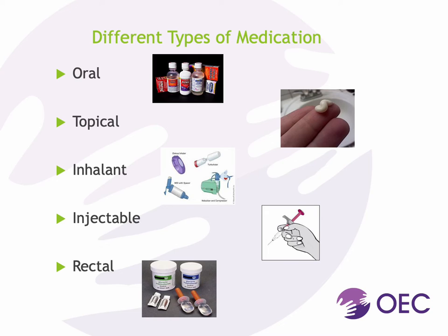Inhalant medications are those that you breathe directly into your lungs. Examples are inhalers and nebulizers. Injectable medications are liquids that are put into the body, usually with a needle which pierces through the skin. Some examples of injectable medications are epi pens, insulin, and glucagon. Lastly, we have rectal medications, which are generally in the form of a suppository or enema, which is inserted directly into the rectum.